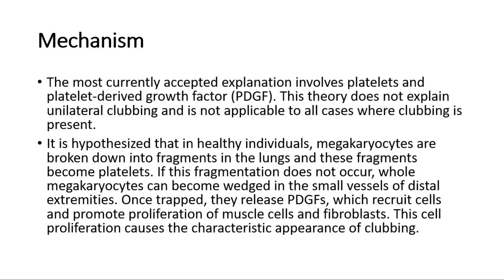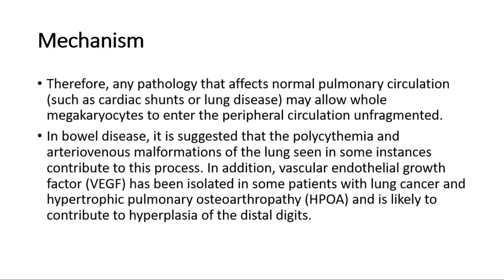This theory does not explain unilateral clubbing and is not applicable to all cases. It is hypothesized that in healthy individuals, megakaryocytes are broken down into fragments in the lungs, and these fragments become platelets. If this fragmentation does not occur, whole megakaryocytes can become wedged in the small vessels of distal extremities. Once trapped, they release PDGF, which recruits cells and promotes proliferation of muscle cells and fibroblasts, causing the characteristic appearance of clubbing. Therefore, any pathology affecting normal pulmonary circulation, such as cardiac shunts or lung disease, may allow whole megakaryocytes to enter the peripheral circulation unfragmented.